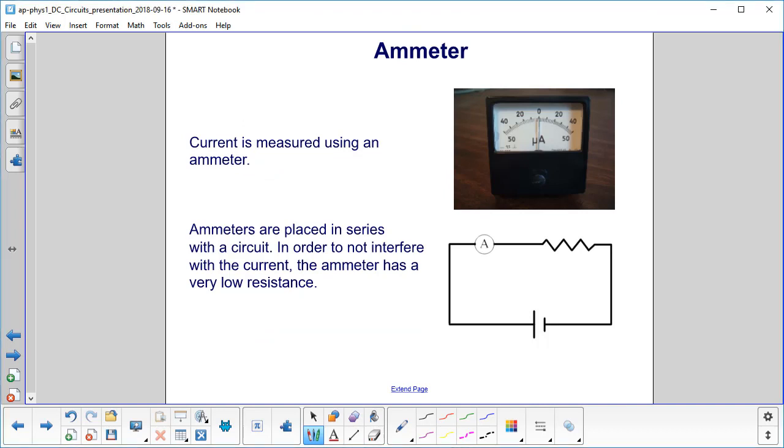Current is measured using an ammeter. Am, short for amps, which is short for amperes. These are placed in series with the circuit.